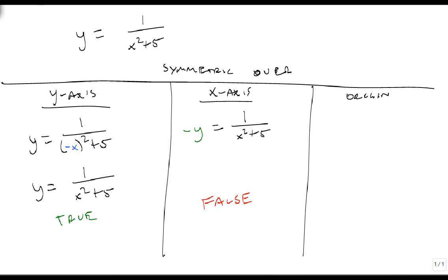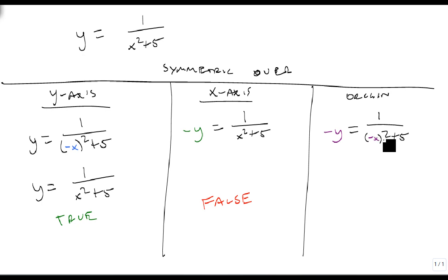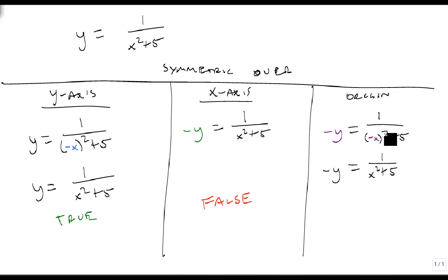For the origin test, we replace both x and y. So we get -y = 1/(-x)² + 5. When we evaluate this, the -y stays as -y, but 1/(-x)² + 5 becomes 1/(x² + 5) because -x times -x is x². Since this is not the same as the original, this is also false — it is not symmetric over the origin.